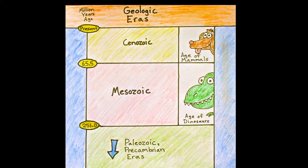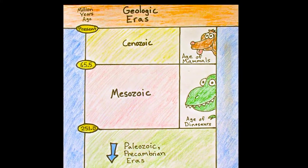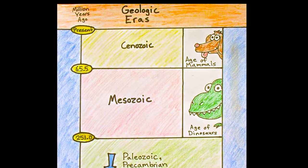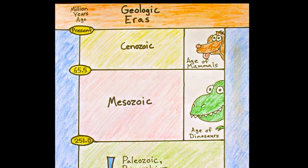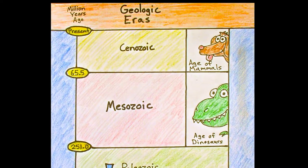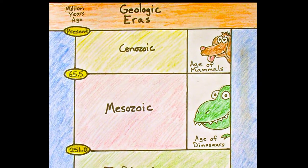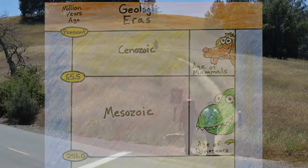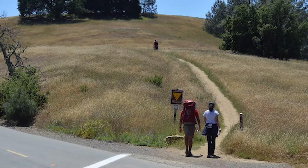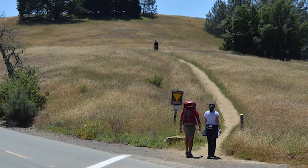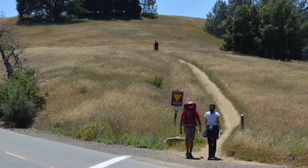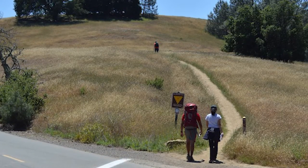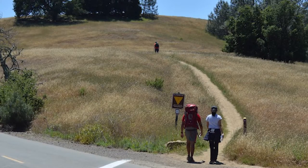On one side, we're standing on Great Valley Sequence about 75 million years old — and maybe dodging Tyrannosaurus rex if there was any land here at the time. On the other side, we've made the leap forward to about 50 to 45 million years old. Age of mammals, the Cenozoic.